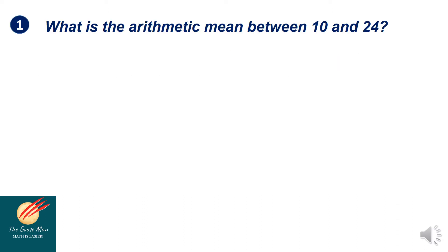Let us consider problem number one: what is the arithmetic mean between 10 and 24? Since we have only two numbers, to get the arithmetic mean, this is simply the average of 10 and 24. So we add 10 and 24 divided by 2, which gives us 34 over 2, so the arithmetic mean is equal to 17.